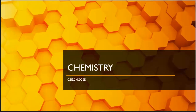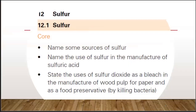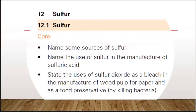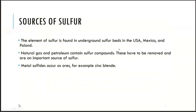Today's class is geared to covering two major objectives. The first is sulfur — we want to look at the sources of sulfur, the uses of sulfur in the manufacture of sulfuric acid, and we want to be able to state the uses of sulfur dioxide as a bleach in the manufacture of wood pulp for paper and as a preservative by killing bacteria.